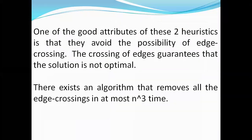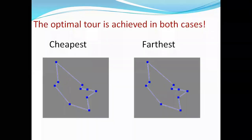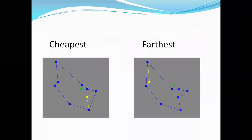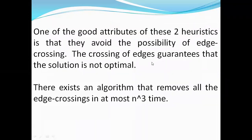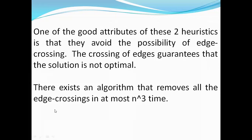One important issue to avoid is edge crossing. Edge crossing guarantees the solution is not optimal, because in the farthest mode the salesman skips the nearest point and travels to a farther one, causing crossing of edges. Such crossing makes the route sub-optimal.